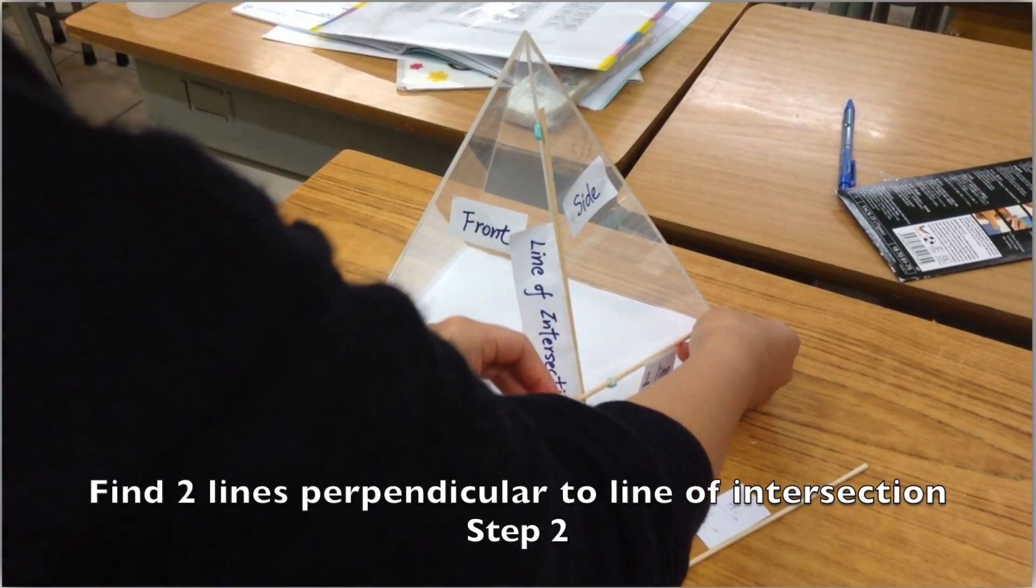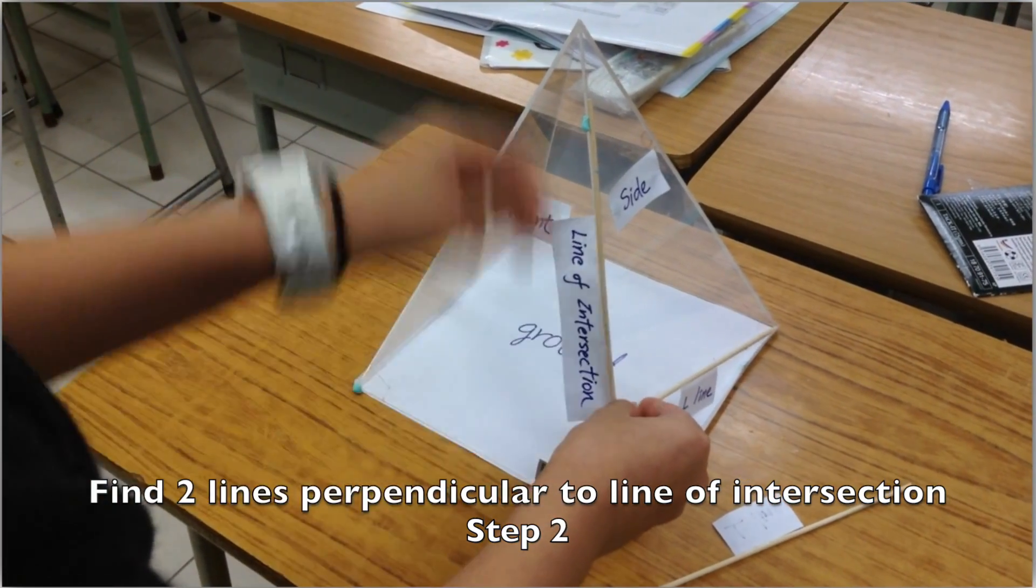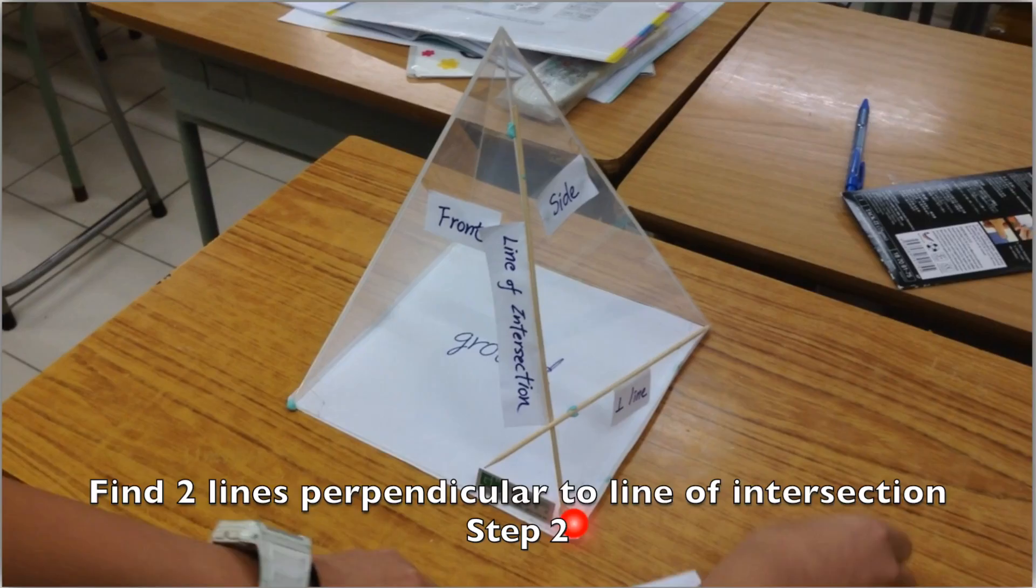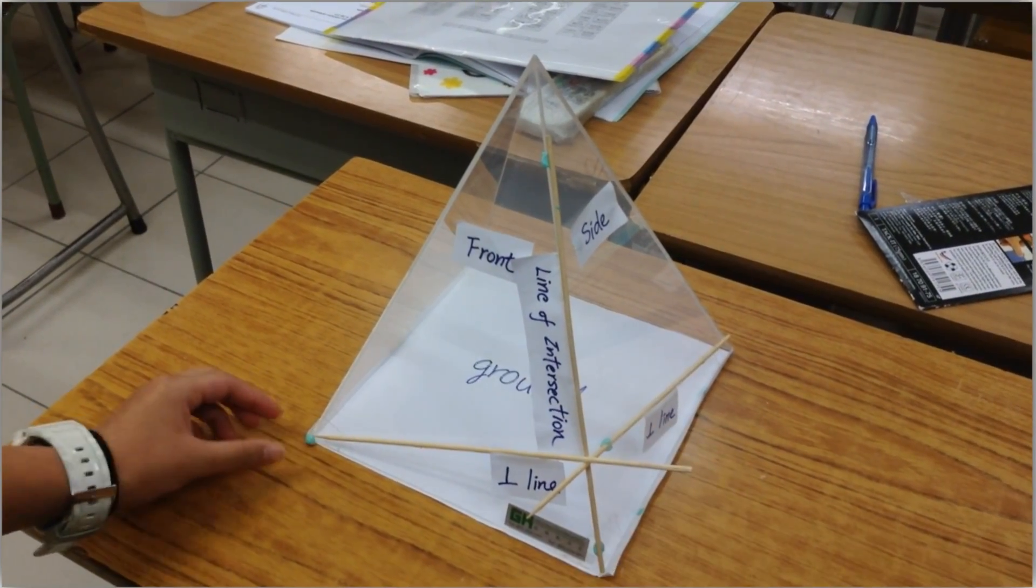And again, we have to find two lines, line on the front plane and side plane, and perpendicular to this line of intersection, perpendicular. So it will be something like this.